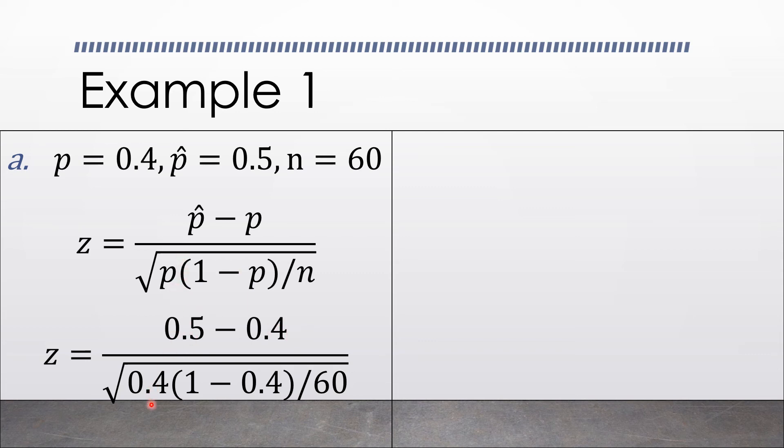p as 0.4, multiplied by 1 minus 0.4, because p is 0.4, and n is 60. After replacing, we just need a calculator, and then input this, and it will give us z is approximately equal to 1.58, rounded off to two decimal places.